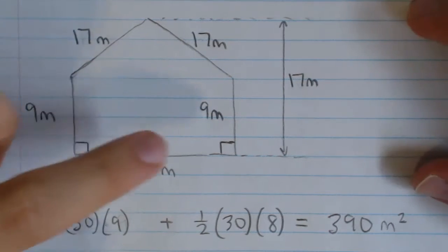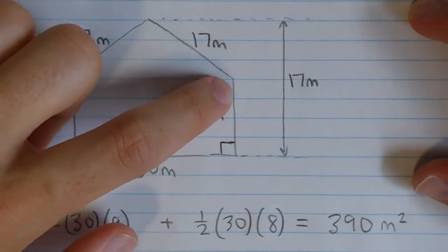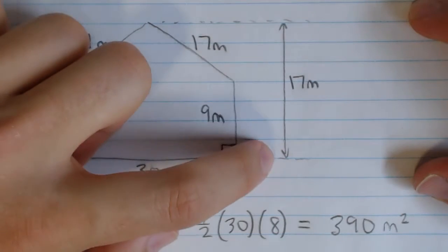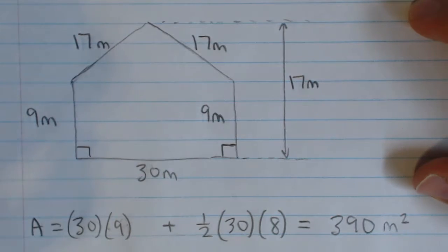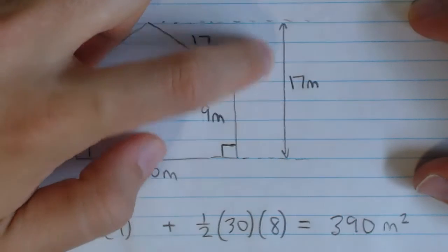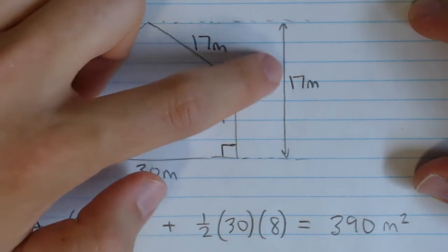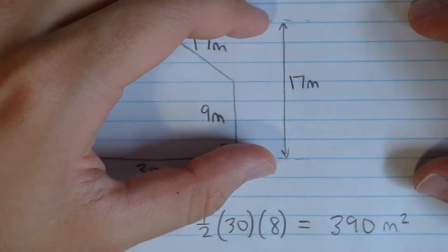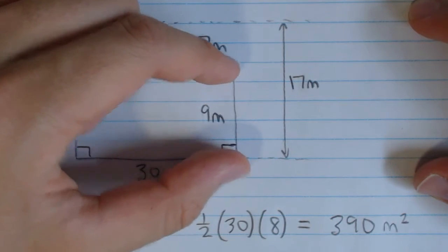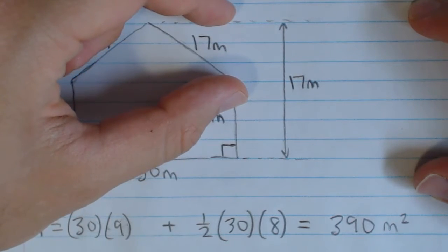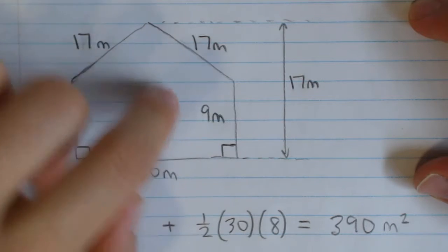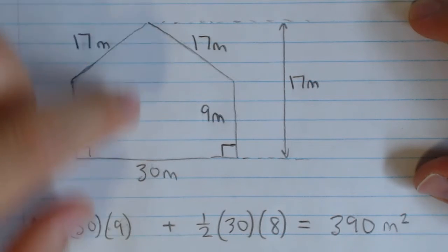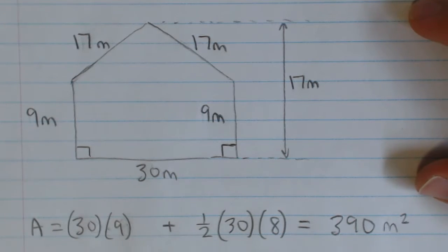It's not given explicitly what that is, but we can find it, because we know that if this length is 9 meters, from here to here, and from here to here is 17 meters, then the distance from here to here would be the difference. So 17, take the total, subtract this part, and we get this part. And so that'll be 8 meters. That's the height from here to here. And so we have 1 half times 30 times 8.